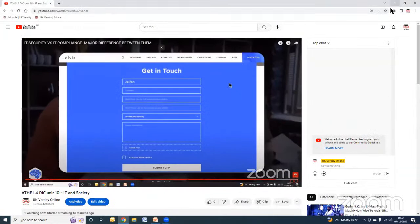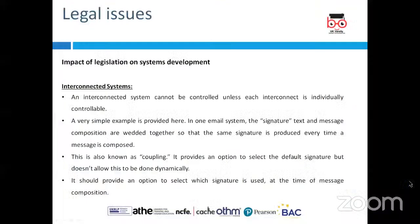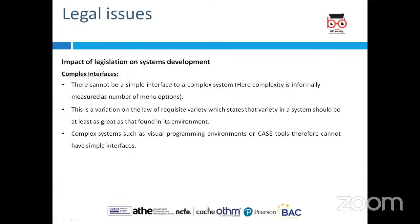You have watched the video which gave us full insights of how compliance and security work within IT organizations. We can now also look into other aspects, such as complex interfaces, whereby having complex interfaces there can be a simple interface for a complex system. What will now happen is that this is a variation of the law of requisite variety, which states that variety in the system should be at least as great as the variety of its environment.